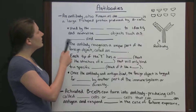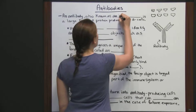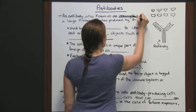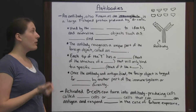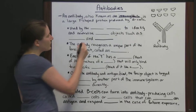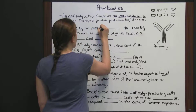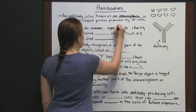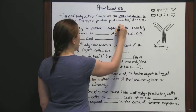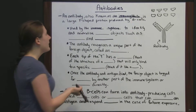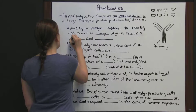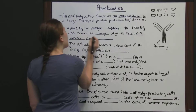Antibodies are also known as immunoglobulins, and they are large Y-shaped proteins produced by B-cells. An antibody is used by the immune system — you might have been clued in by the immunoglobulin alternative name — to identify and neutralize foreign objects such as viruses and bacteria.